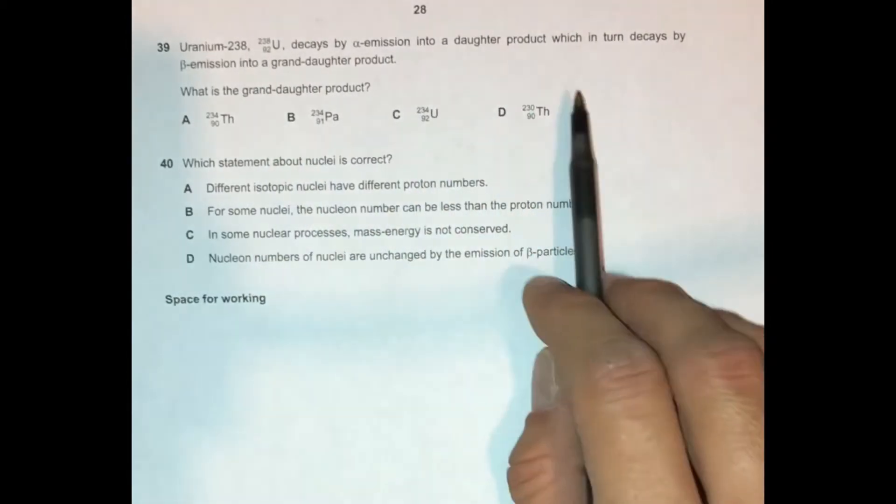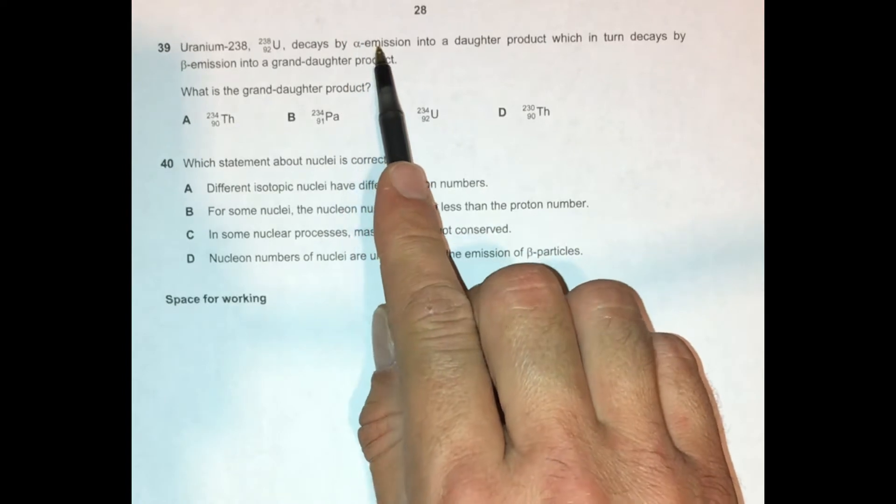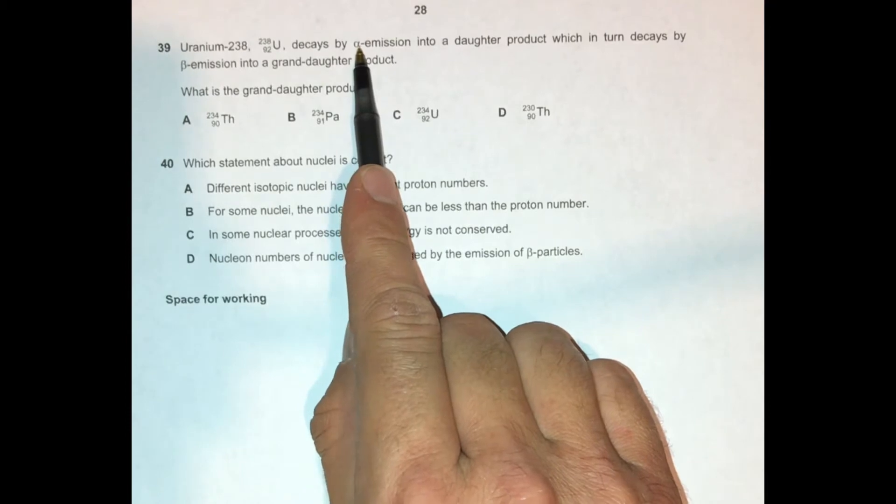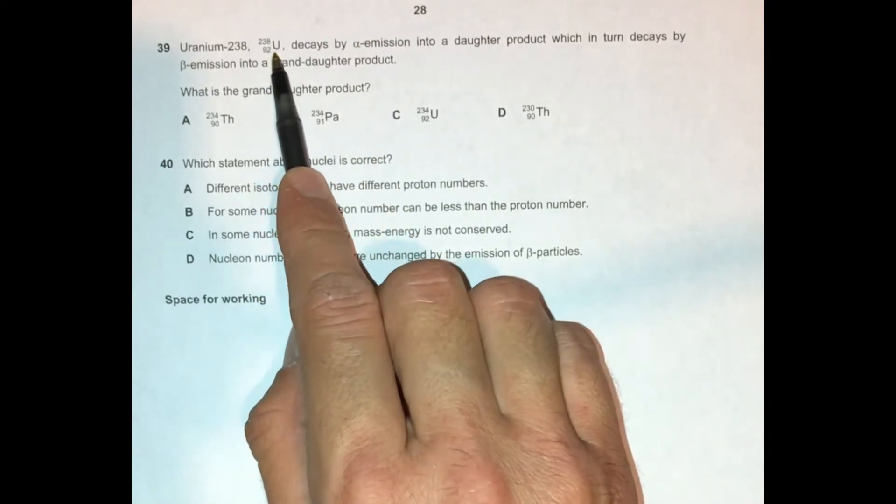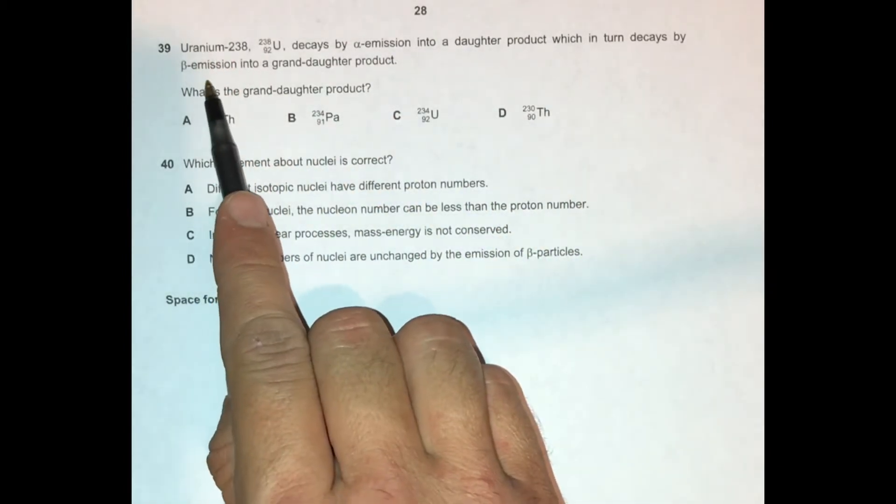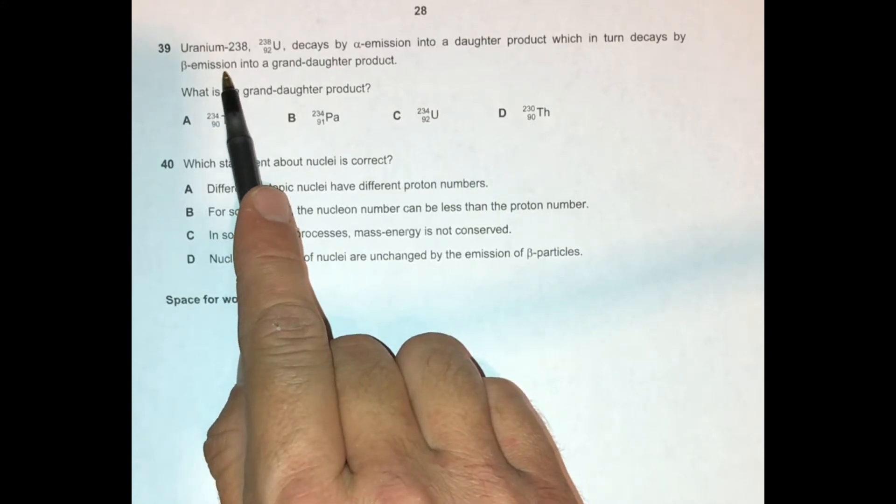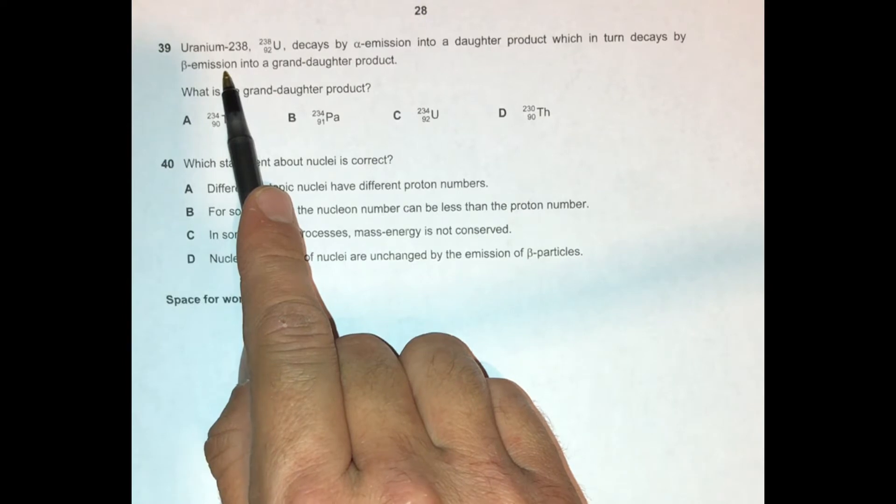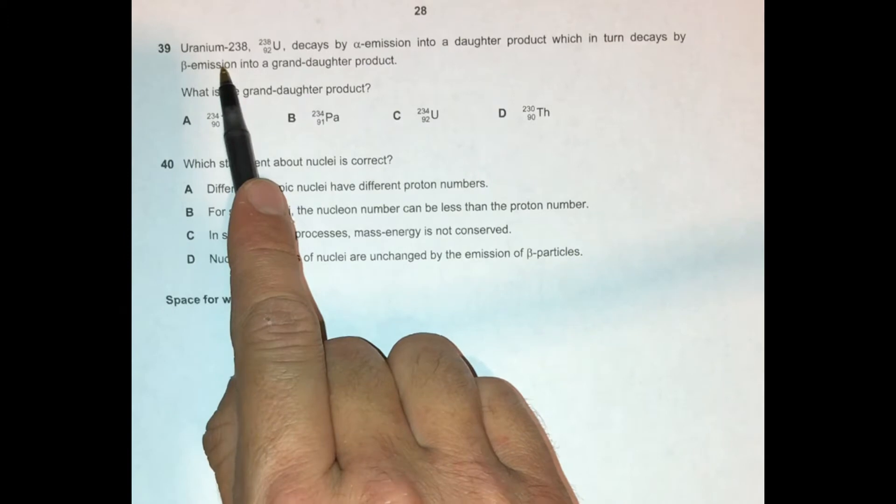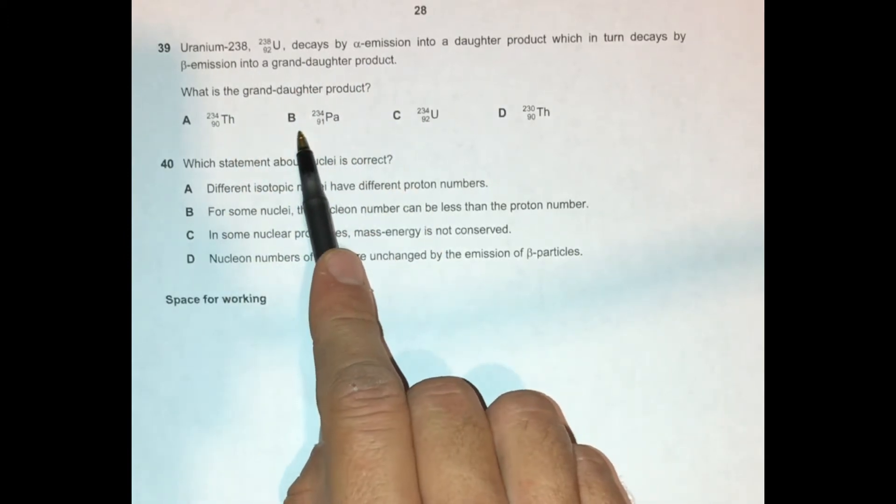Well, if we're really familiar with these types of radiation, then we know that an alpha emission is going to decrease the proton number by two. There are two positive charges in that helium nucleus, and so that's going to bring that uranium down to 90, to thorium. But beta emission is going to increase the proton number, because that's when we have a neutron turning into a proton. And so after this alpha emission, we'd be thorium, but after the beta emission, we would be protactinium. So the correct answer here is choice B.